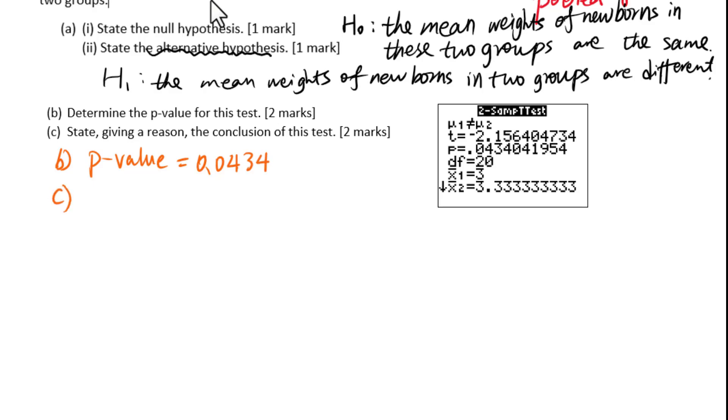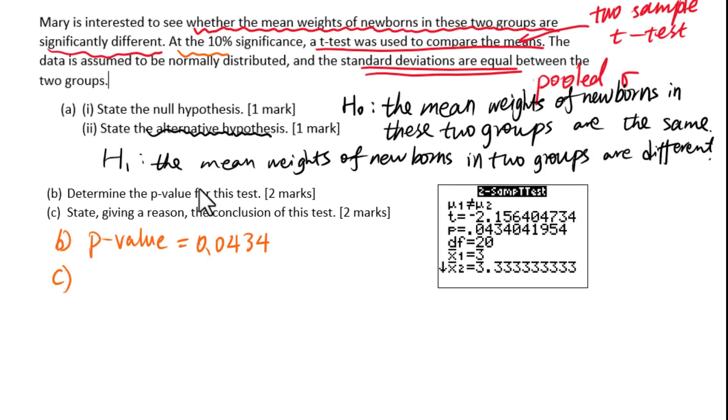State giving a reason the conclusion of this test at the 10% significance level, which means alpha equals 0.1. P-value equals 0.0434. When p-value less than alpha, reject H0. Since 0.0434 less than 0.1, reject H0.